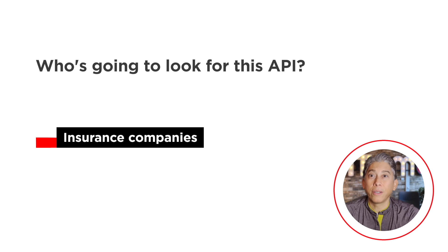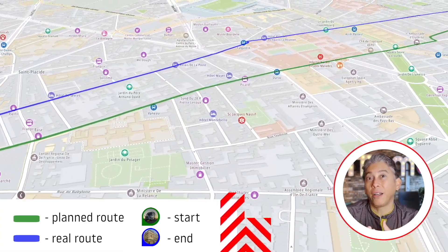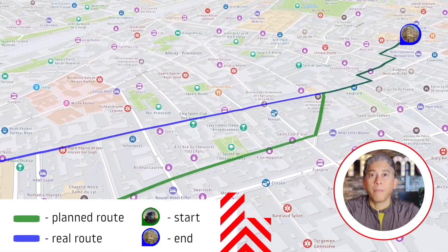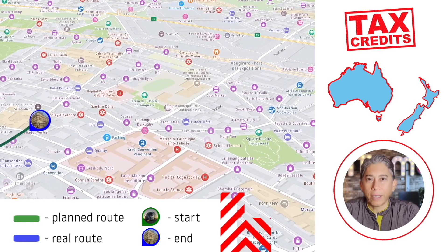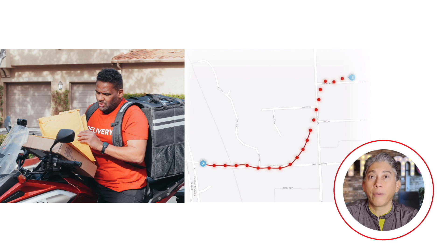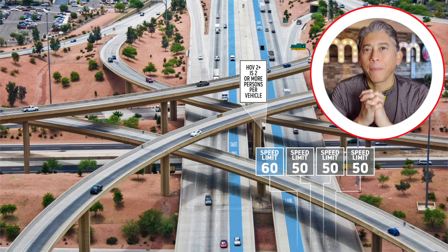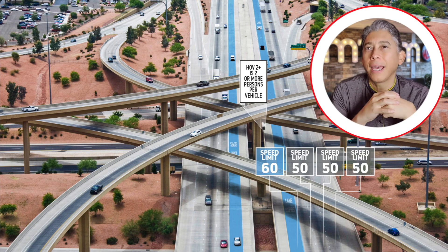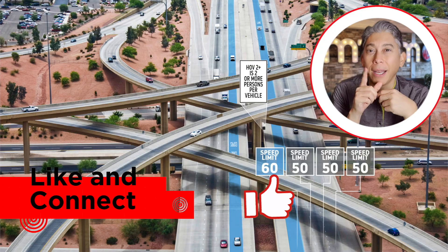Who's going to love this API? Insurers, fleet and logistics, and on-demand services companies. Fleet and logistics companies can check between the planned and real routes their drivers took, which can help them claim tax credits — as is happening right now in New Zealand and Australia — and check the driving behavior of their fleet. Insurance companies will now have the power to offer premium discounts and reward good driving behavior. For on-demand services, you can have smooth visualization of deliveries on the road. If you're building an application that assesses driver behavior, check our Snap to Road API, especially for these use cases. I've left a link in the description for the documentation. Thank you for watching and happy mapping!